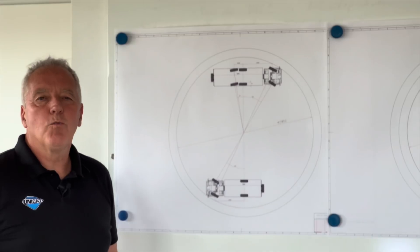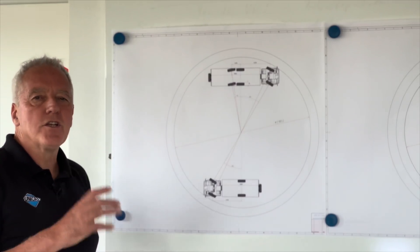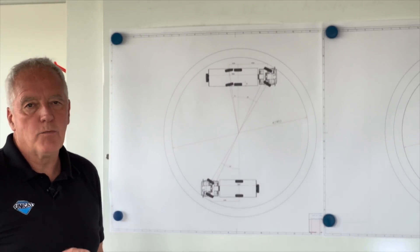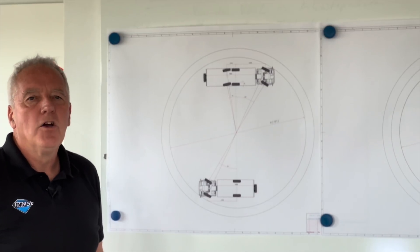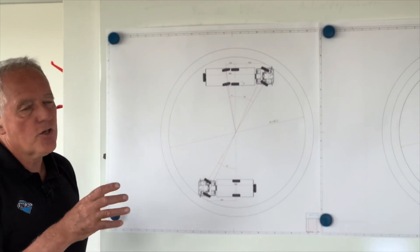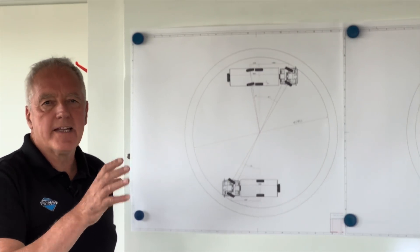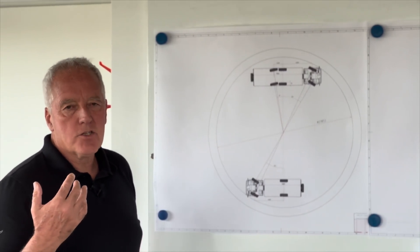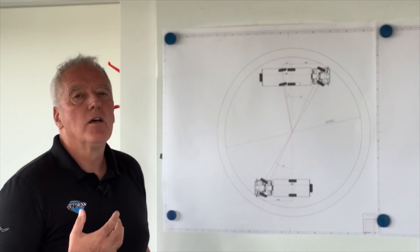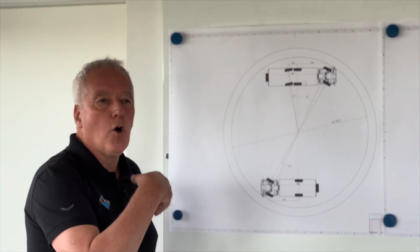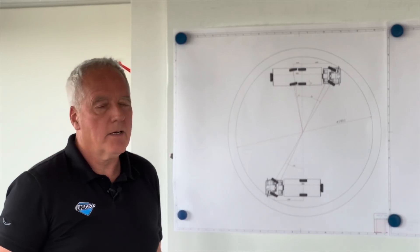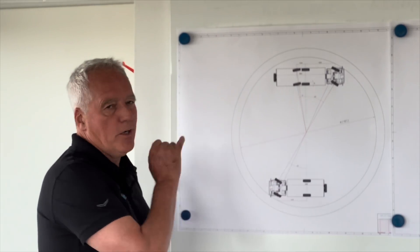So now we have seen the turning circles of a truck without rear axle steering. We have seen the turning circle of a truck with rear axle steering in the normal setup, and we have seen the truck with rear axle steering in oversteering mode. But here we have another drawing, and this might be the most interesting drawing for you.